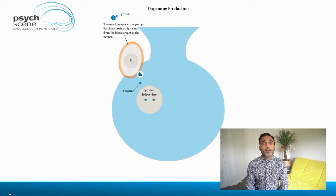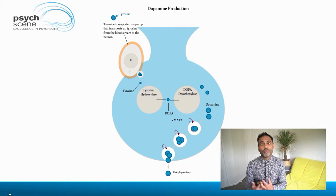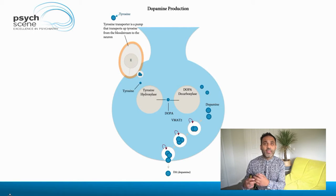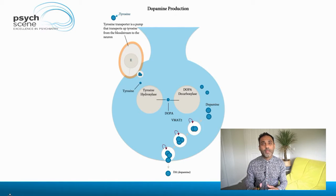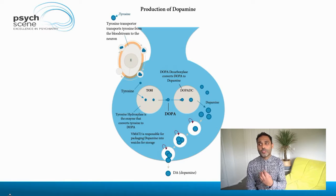We know that dopamine is produced from tyrosine, and tyrosine comes from phenylalanine, which is essentially an amino acid that we take through diet. Tyrosine gets converted to dopa, and dopa gets converted to dopamine. This happens through two enzymes: tyrosine hydroxylase is the first step, and then dopa decarboxylase. The dopamine then gets packaged into vesicles, and these vesicles release dopamine into the synaptic cleft.